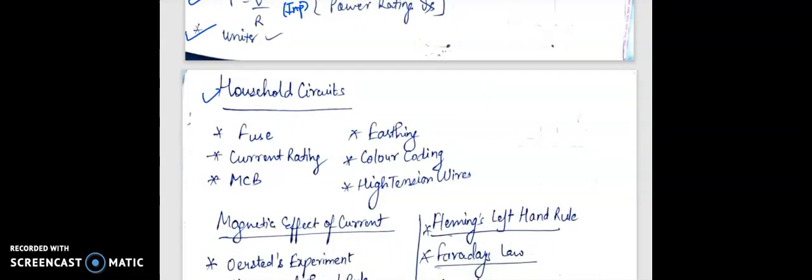Now household circuits: fuse, current rating, MCB, earthing, color coding, and high tension wires - definitions and their uses.